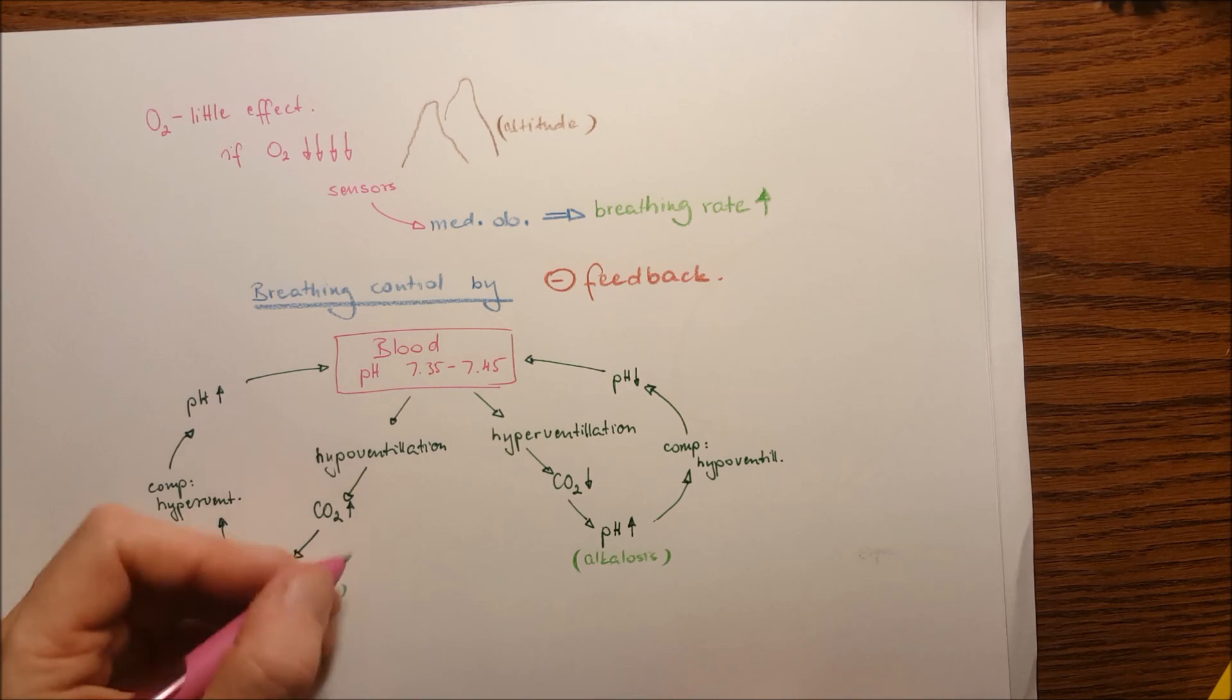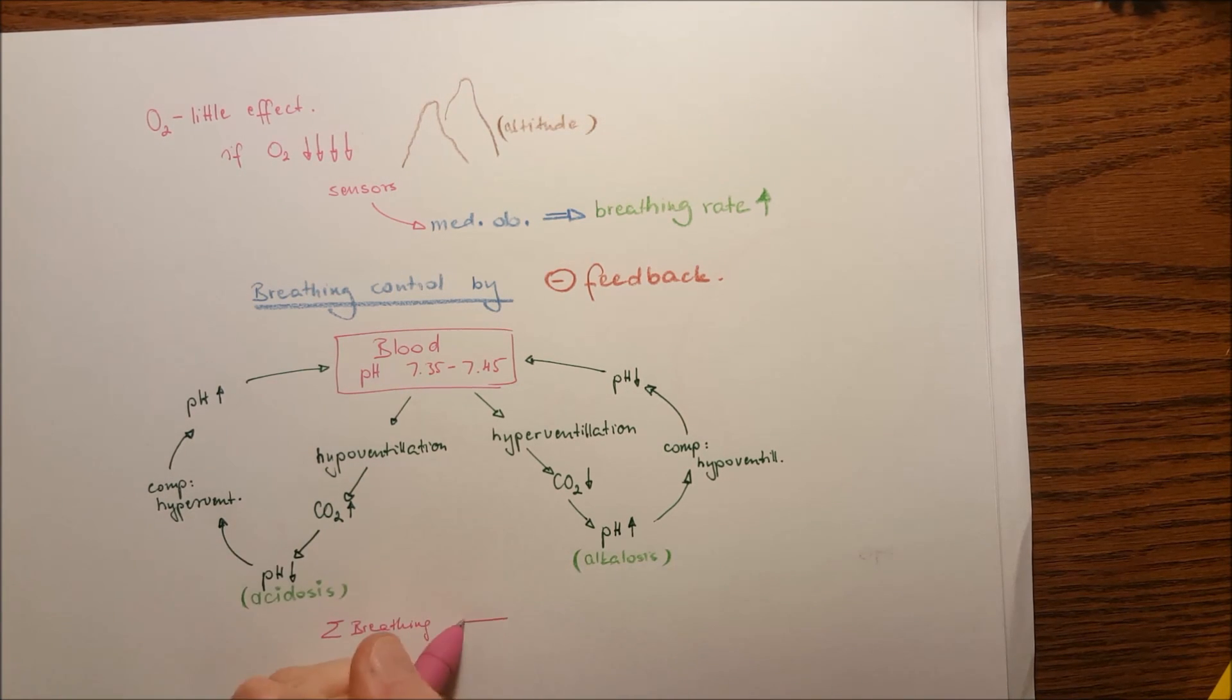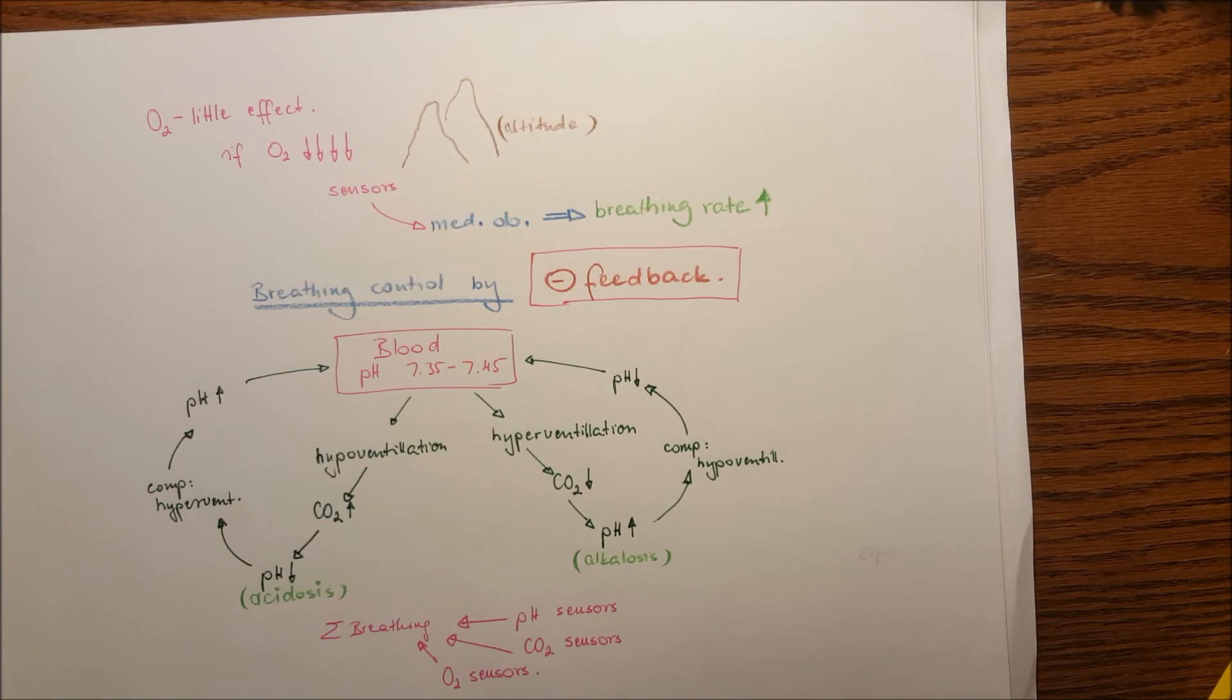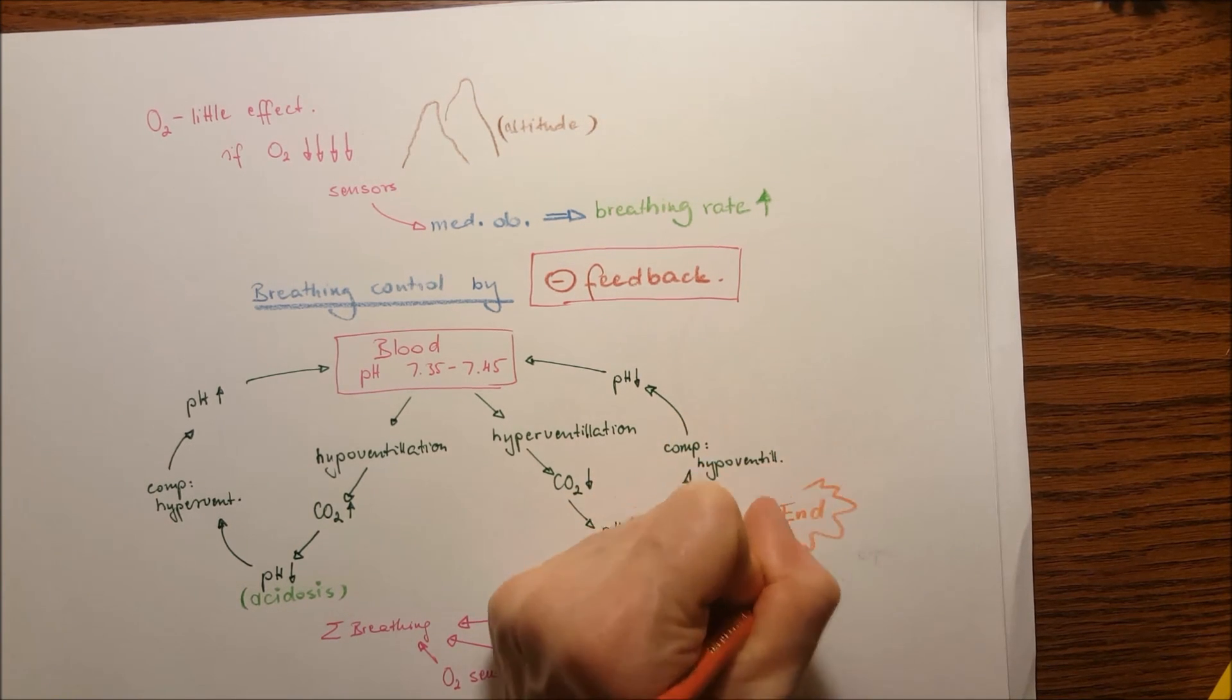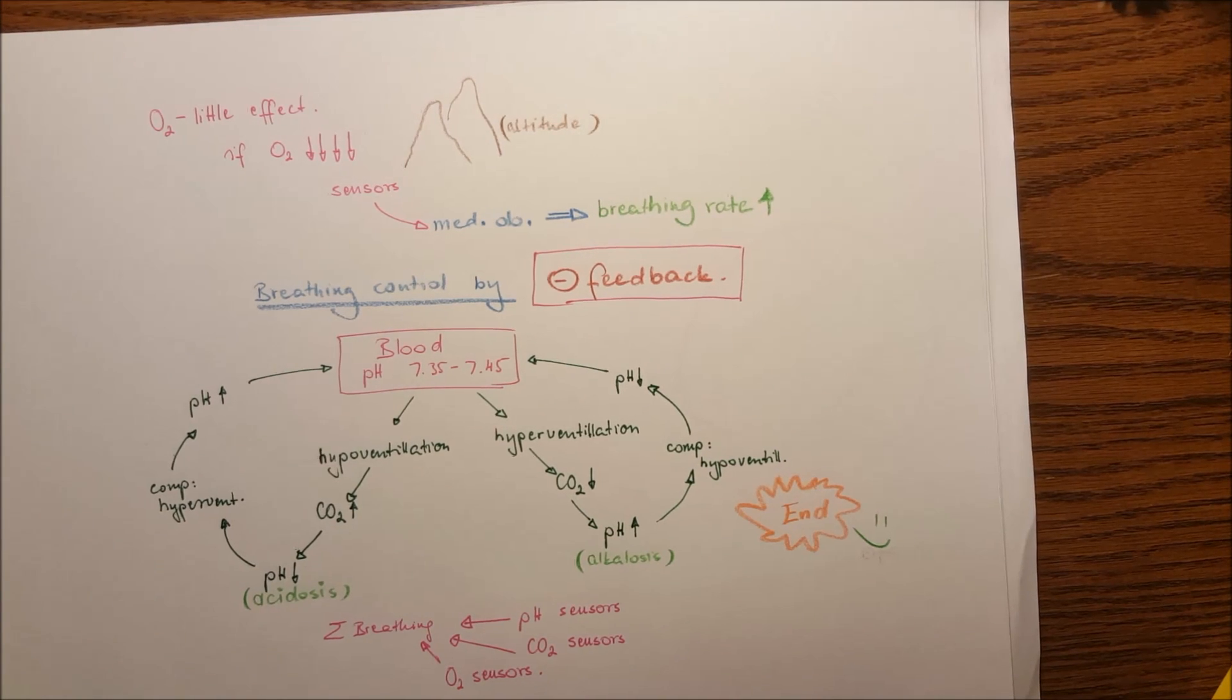So altogether, the breathing is controlled by pH sensors, carbon dioxide sensors, and oxygen sensors in the body that keeps the blood between a small range of pH. That's the end, done.